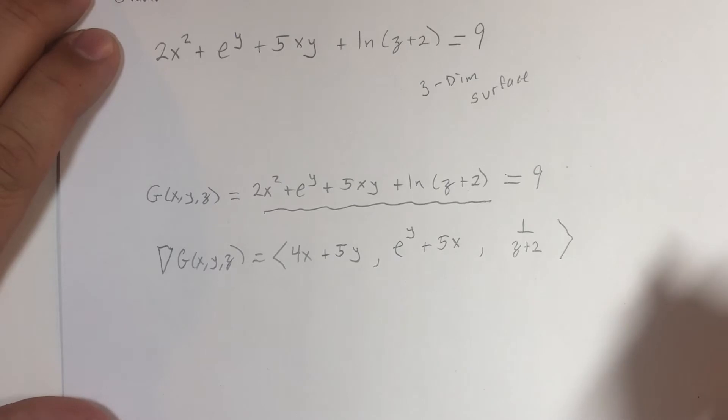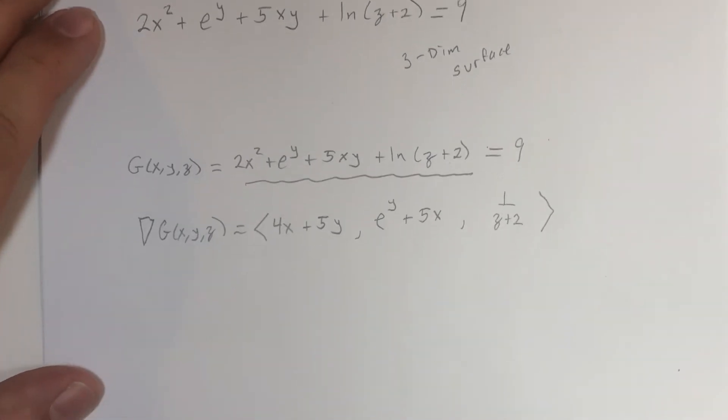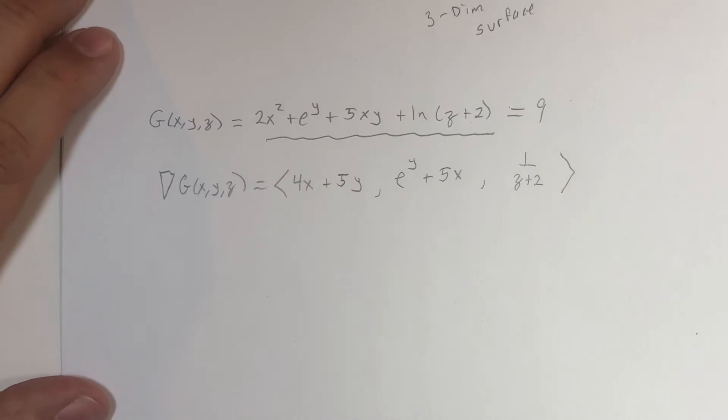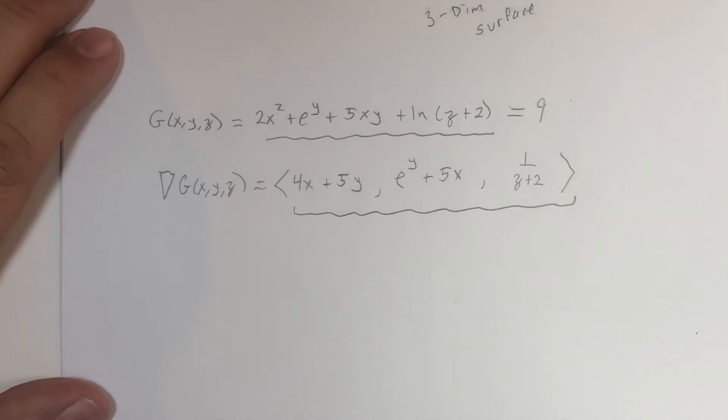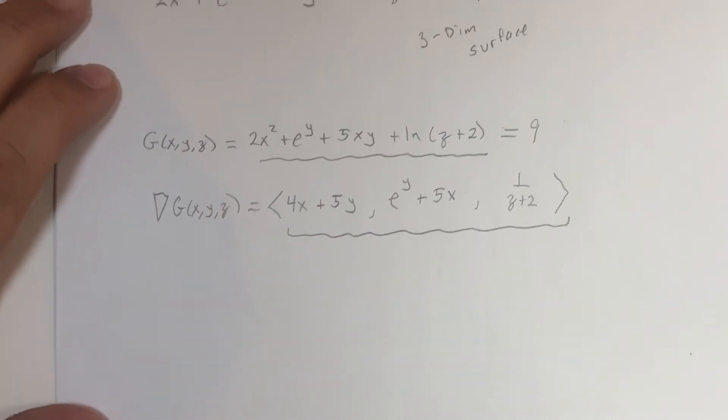All right, and remember I'm using the component form for the vector, but you're welcome to use the ijk notation. So now the question is, what exactly does this mean? What's it all about?